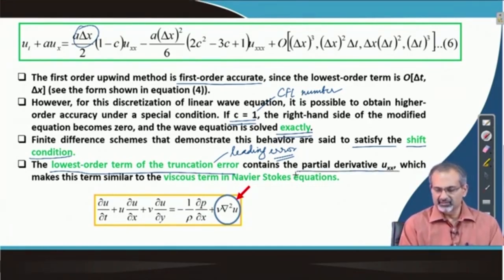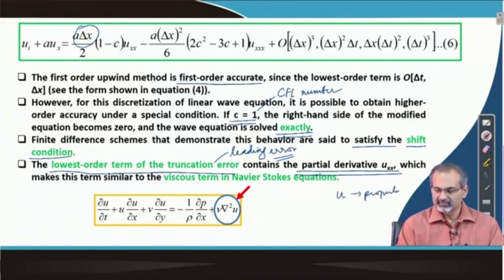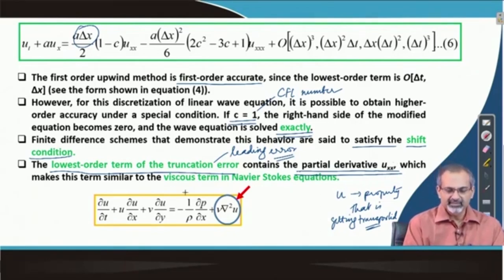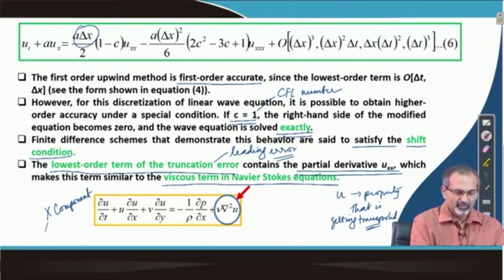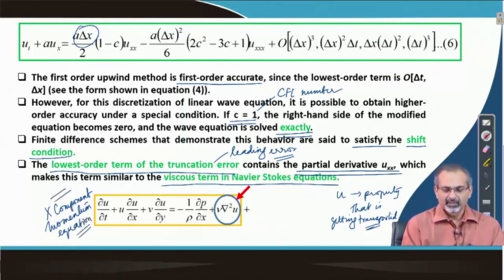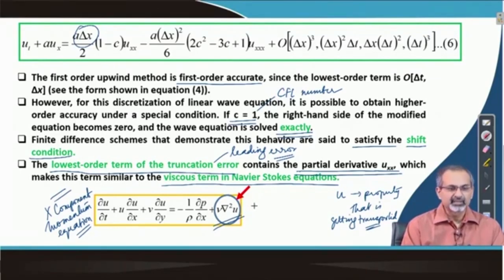The leading error term contains a partial derivative u_xx — the second order derivative in u. Since u is essentially the property being transported, a second order derivative of that property is similar to the viscous term in the Navier-Stokes equation. We have written the x-component momentum equation of Navier-Stokes for easy reference, and we find that this is the viscous term on the right hand side. The leading error term in the truncation error for the first order upwind scheme looks very analogous to that. You do not have a viscosity coefficient, but you have a coefficient we may call the numerical viscosity coefficient.